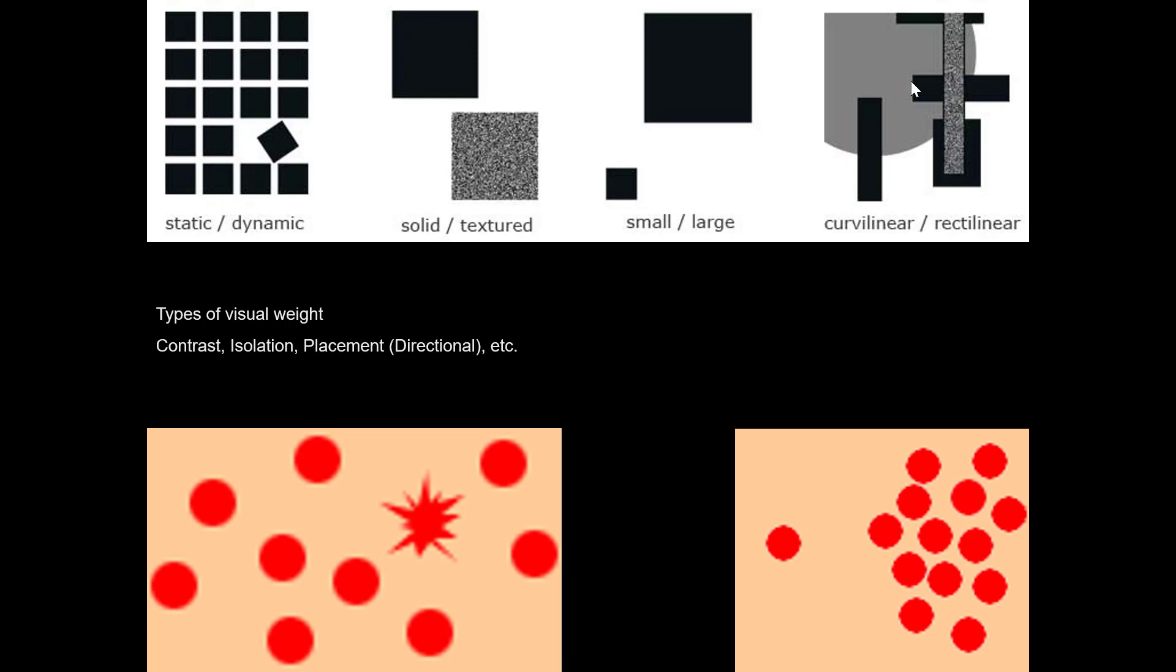An initial glance might make you think that the giant gray circle is the thing that would have the most visual weight. But even though it's giant and it's gray and therefore different than all the other things that are in this composition, it's overlapped in such a way that we probably don't need to think about it right now.